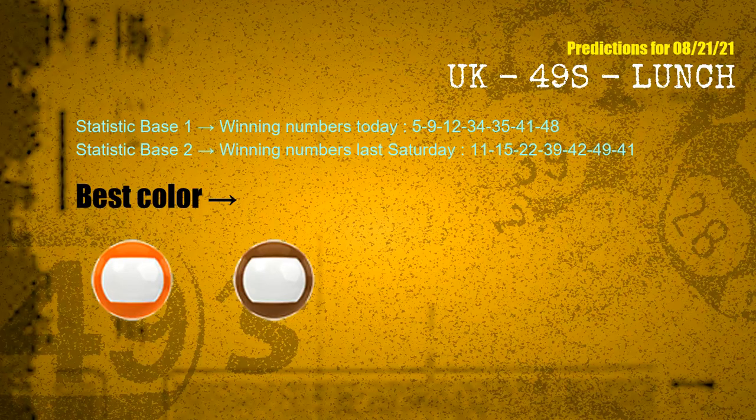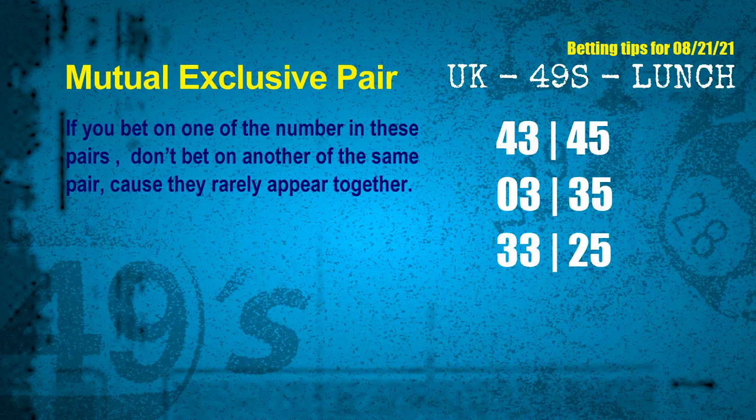According to the statistics above, with winning numbers today 05, 09, 12, 34, 35, 41, 48 and winning numbers last Saturday 11, 15, 22, 39, 42, 49, 41 — the frequent following colors are orange and brown. Now we have some following ones and ball colors. Here are some tips for you to increase hit odds, such as mutual-exclusive pairs.